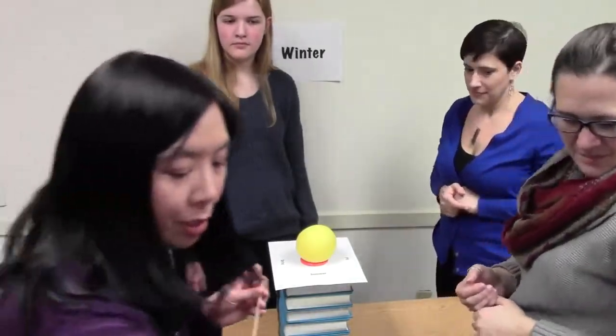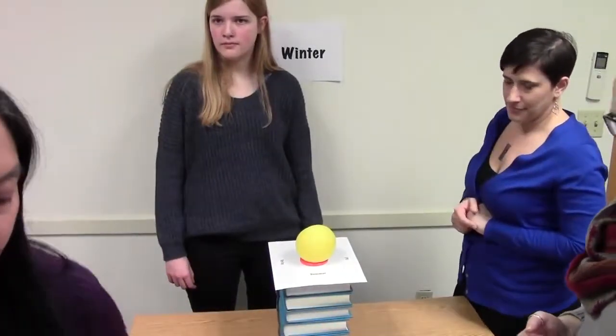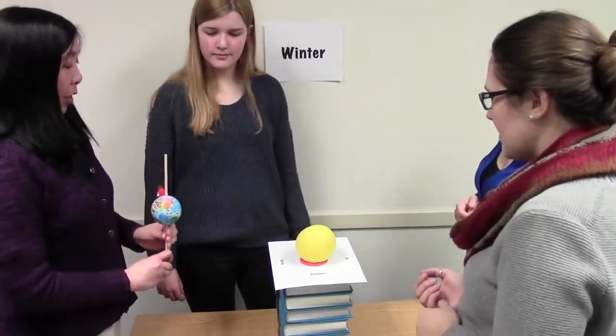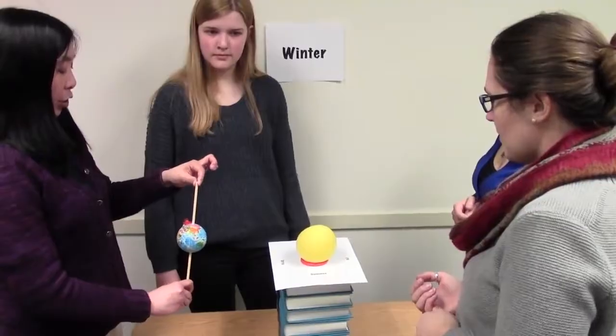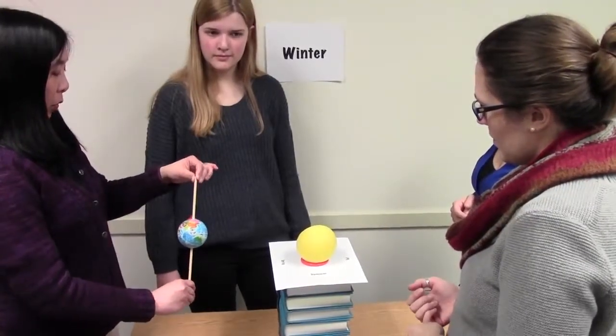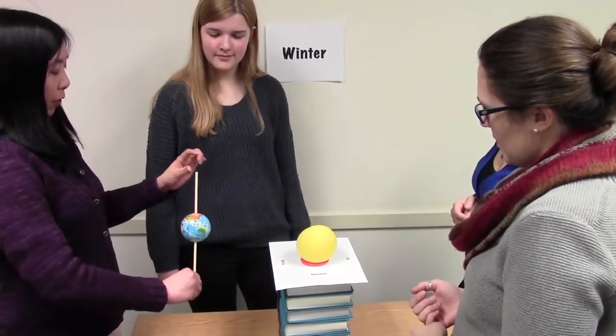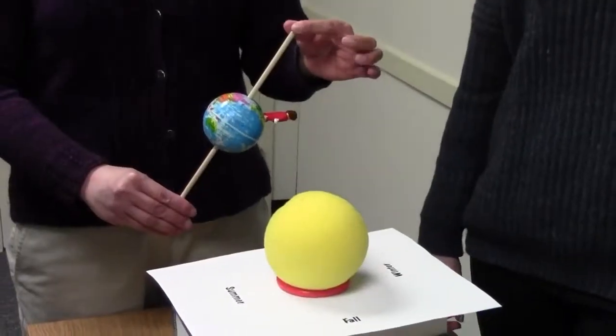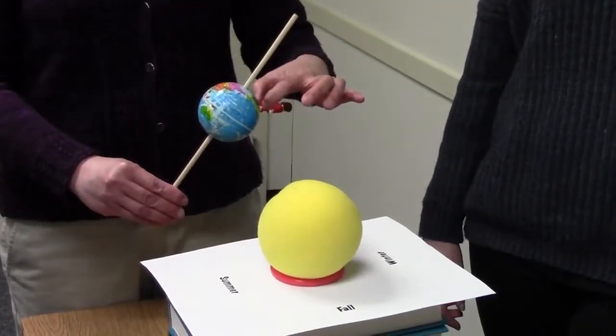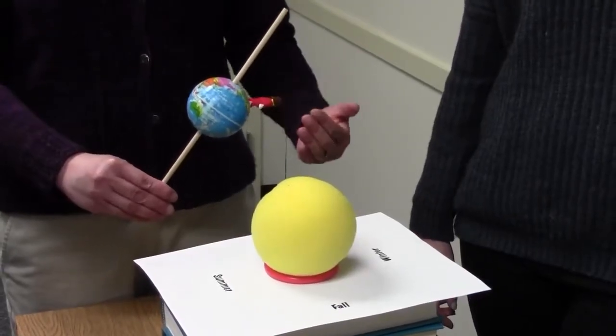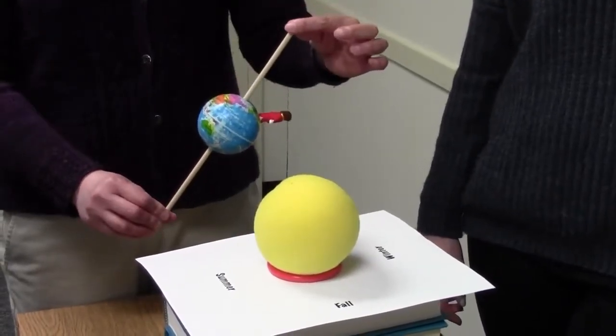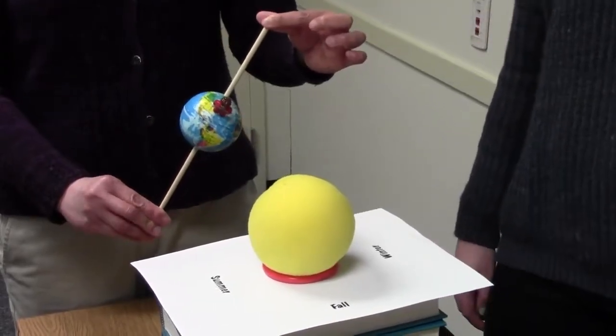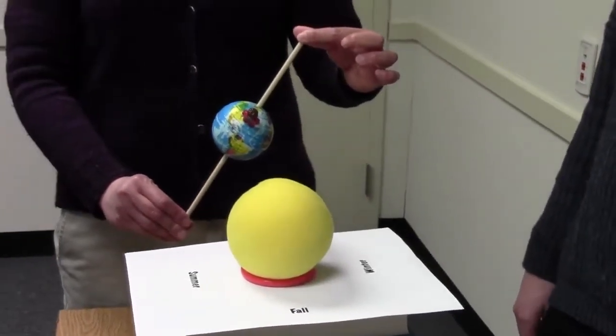So the next thing we do, once students appropriately demonstrate that, then they have to show the same thing but day and night at each season point. So if I'm here at spring, I've got to have my northern axis pointed towards this wall. So right now where my lego person is standing, they are experiencing sunset. So I'm going to rotate my earth so that it is daytime for my lego person, Vicky.